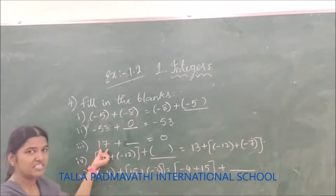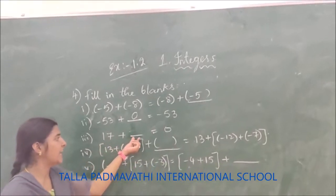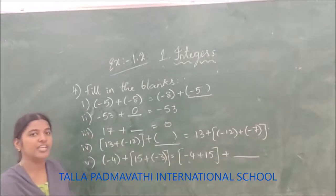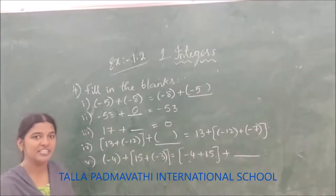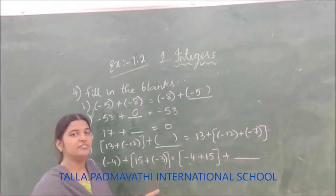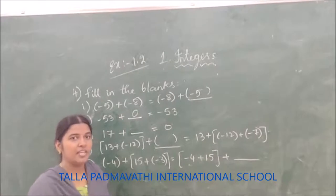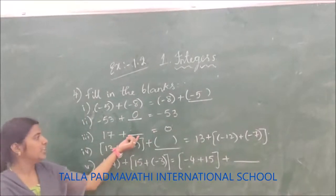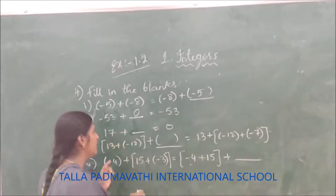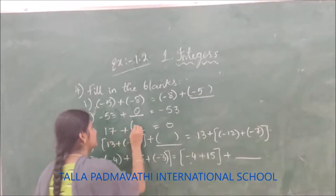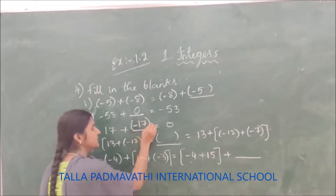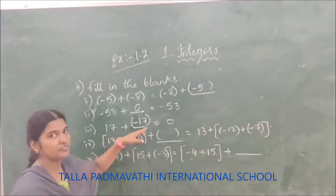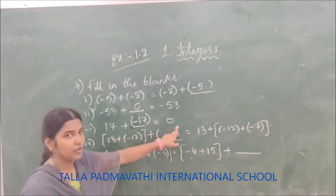Now, 17 plus dash equals 0. When are you going to get 0? If you take A as any integer and add the additive inverse of A, you get 0. So you need to take the additive inverse of 17, which is minus 17. The additive inverse of 17 is minus 17, so 17 plus minus 17 equals 0.